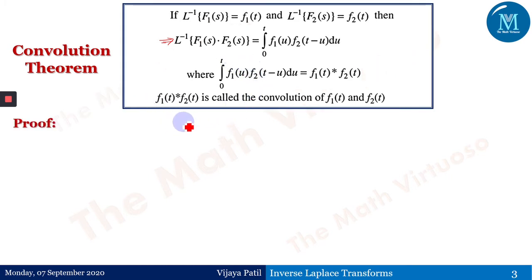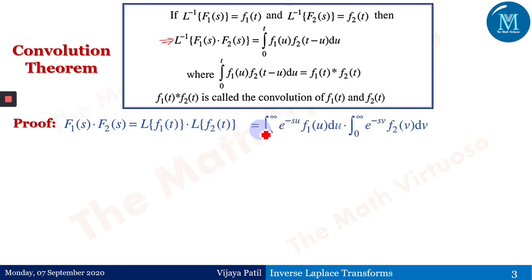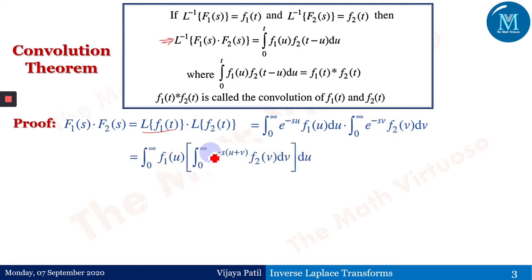Let us walk through the proof. We have F1(s)·F2(s), the product, which equals the Laplace transform of f1(t) times the Laplace transform of f2(t). Using the basic definition of the Laplace transform, the first term gives the integral from 0 to infinity of e^(−su)·f1(u) du, times the integral from 0 to infinity of e^(−sv)·f2(v) dv. This equals the integral from 0 to infinity of f1(u) times the integral from 0 to infinity of e^(−s(u+v))·f2(v) dv du.